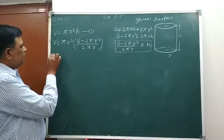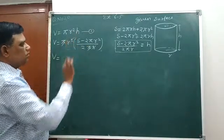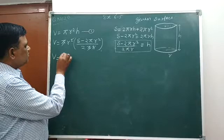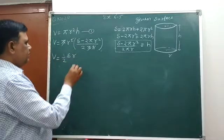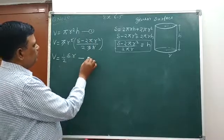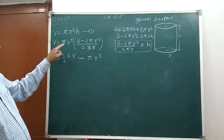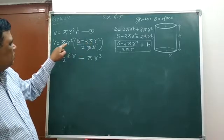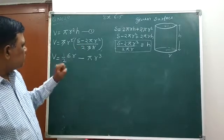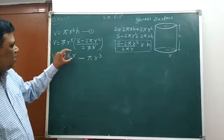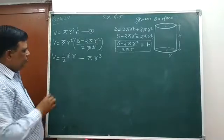We have to simplify it. π and π cancel out, r and r also cancel out. Then we will get 1 upon 2, Sr minus this 2 and 2 cancel out. This r multiplied by 2πr² gives πr³. Then we will get V equals 1 upon 2, Sr minus πr³. Now volume is in one variable r.